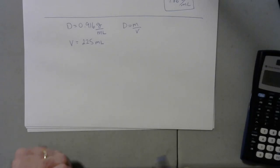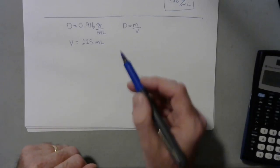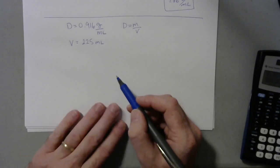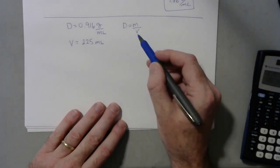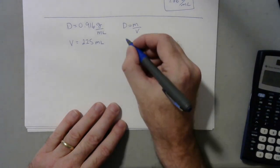So looking at this next problem you see you're given the density and the volume. We're still working with D equals M over V, but the problem asks us to solve for M.